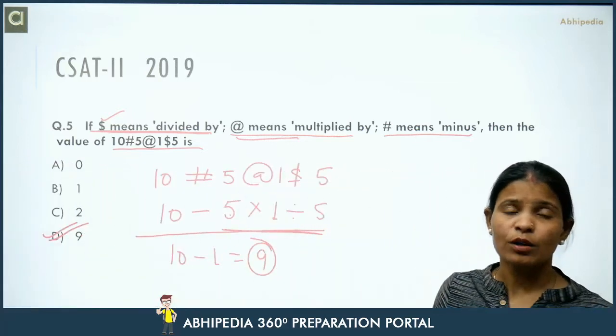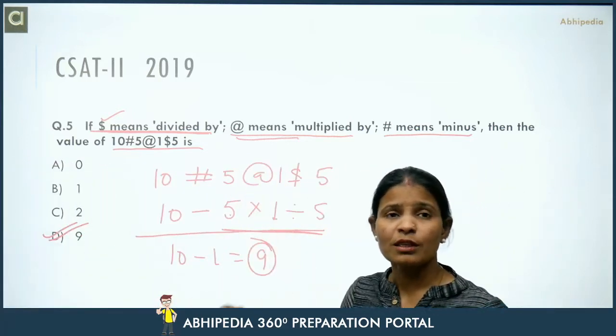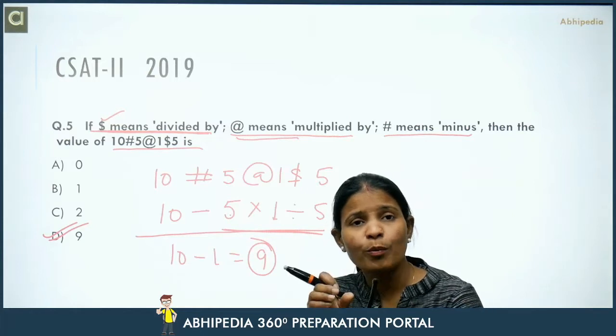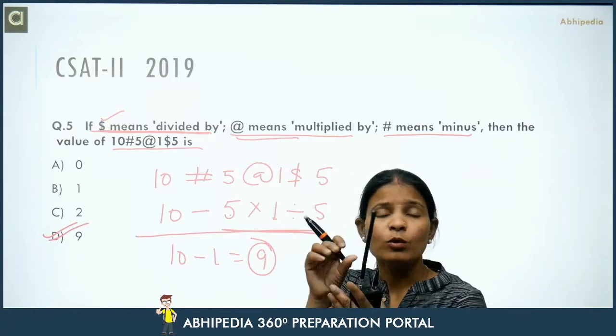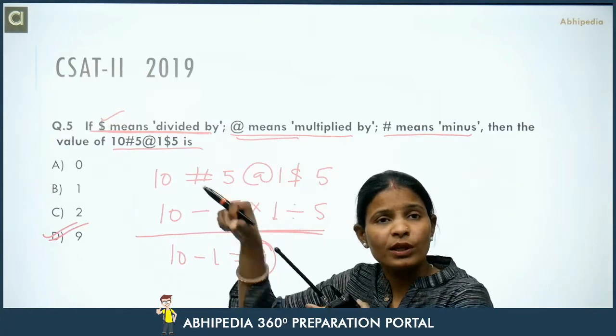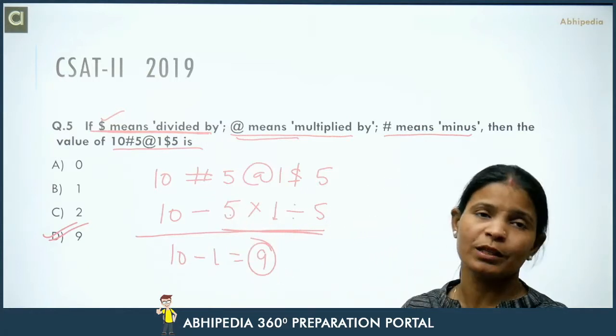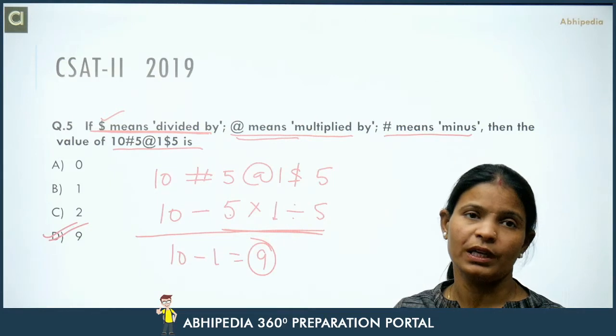So 9 is the correct answer. For this type of question where operators are coded with symbols, replace each symbol with its actual operator first, then apply BODMAS to solve the expression.